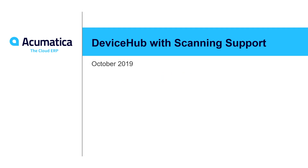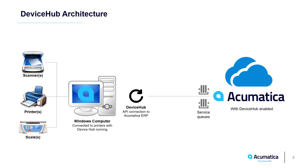Device Hub with scanning support. Acumatica's Device Hub supports integration with local devices such as printers, scales, and scanners. Device Hub is a small Windows program that runs on a computer with access to physical devices. It serves as an intermediary to connect the Acumatica cloud with printers, scales, and scanners.